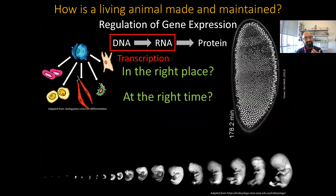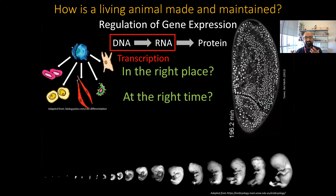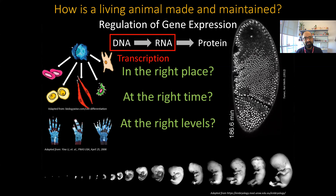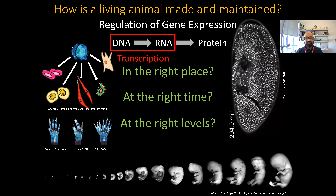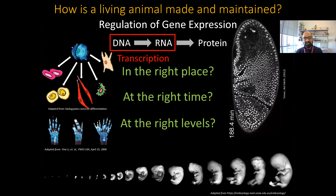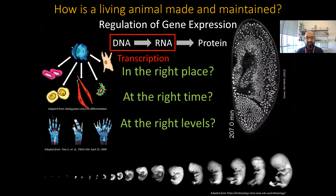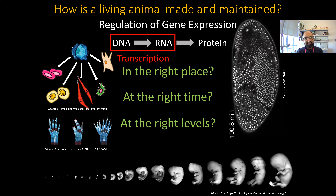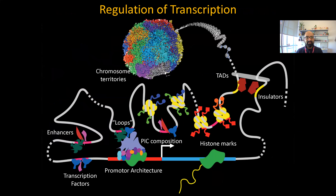Genes must be regulated at the right time to make development proceed with the beautiful choreography that we can observe, and at the right level so that we can avoid developmental defects. But when we look at a textbook, this is often described in a very static manner — a sort of linear arrangement, almost like an assembly line, where things bind and then produce some sort of output.